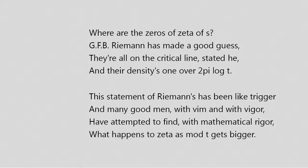Where are the zeros of zeta of s? GFB Riemann has made a good guess — they're all on the critical line, stated he, and their density is 1 over 2π log t. This statement of Riemann's has been like a trigger, and many good men with vim and with vigour have attempted to find with mathematical rigour what happens to zeta as mod t gets bigger.